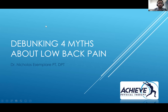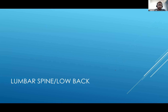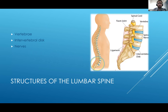So we're going to debunk four myths about low back pain. I want to run through the lumbar spine and the low back — just some structures so we're all on the same page and can follow along. The three main structures are the vertebrae, intervertebral discs, and nerves.